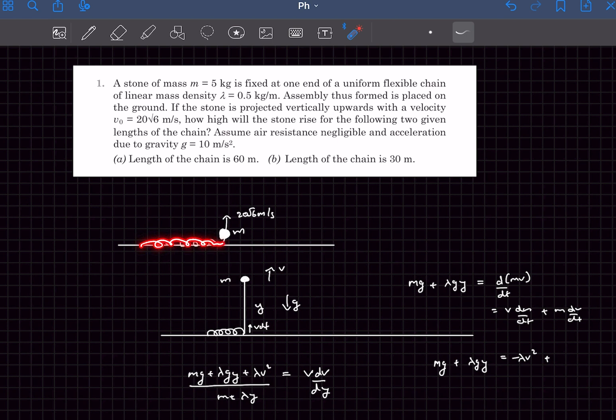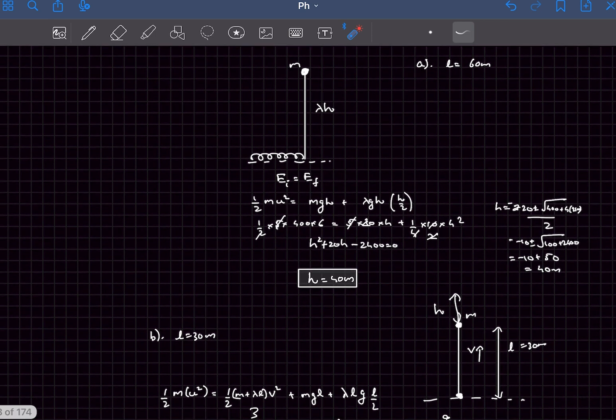One end of the chain is fixed to a mass of small m, and this mass is projected up into the air with a velocity of 20 root 6 meter per second. We are required to find the maximum height till which this ball rises.